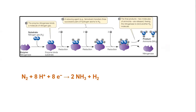In the equation, you can see that out of 8 hydrogen ions, 6 are used to form 2 molecules of ammonia, and 1 molecule of hydrogen is released.